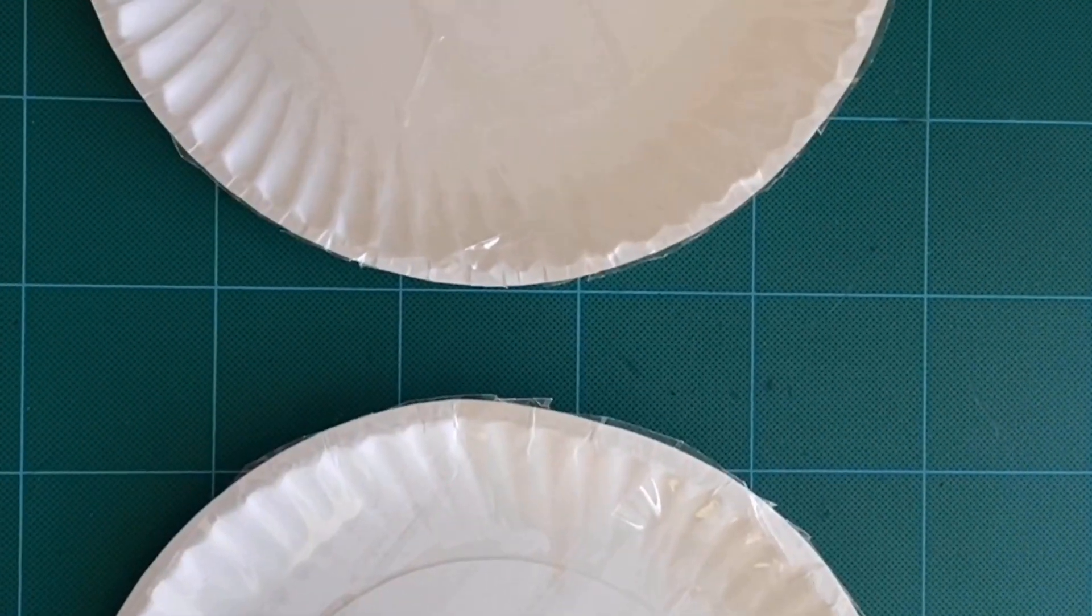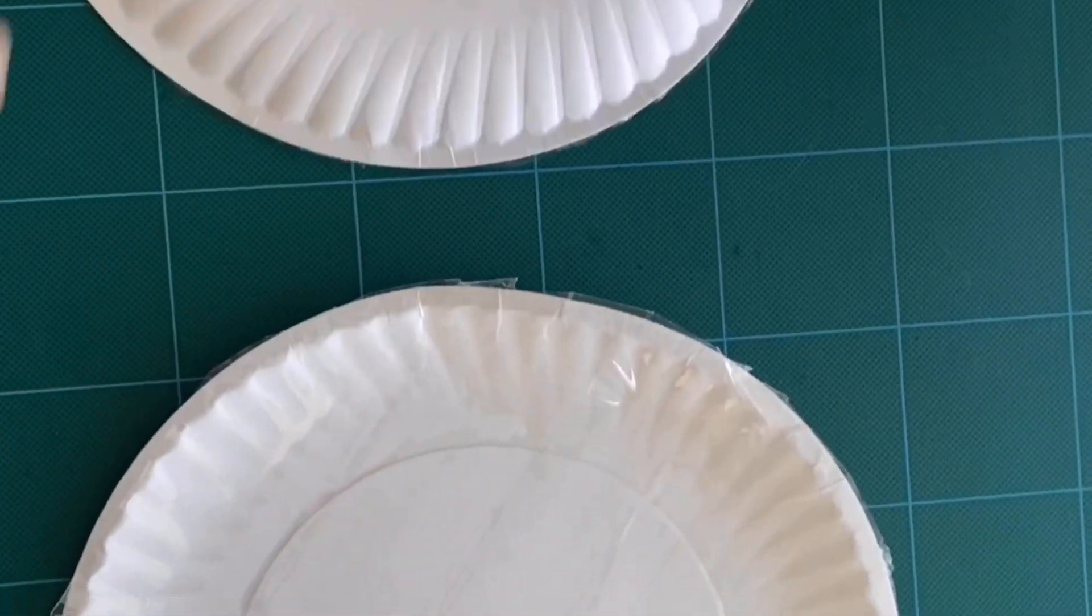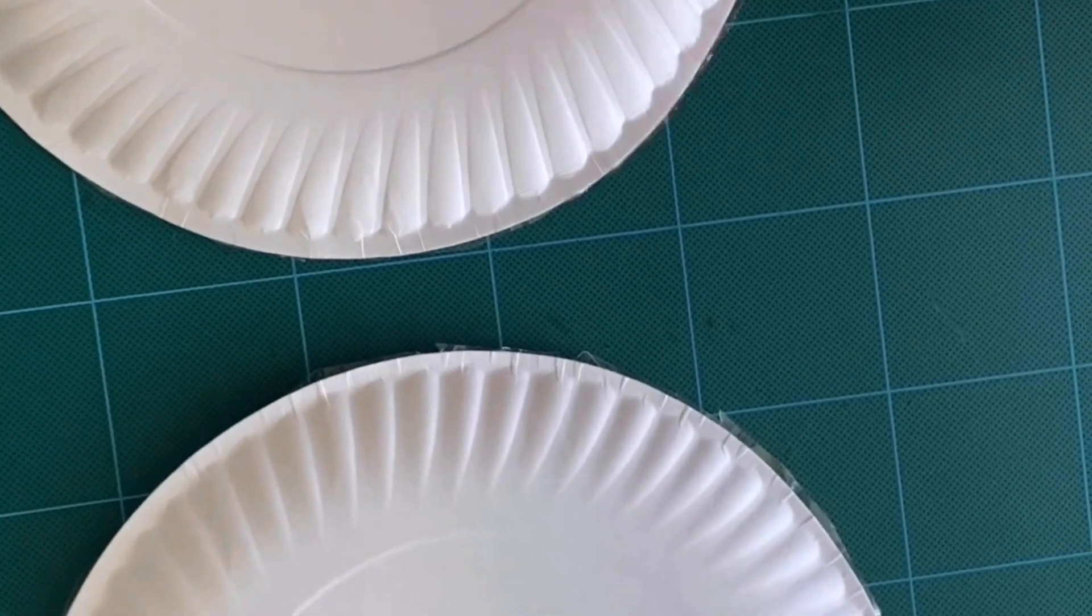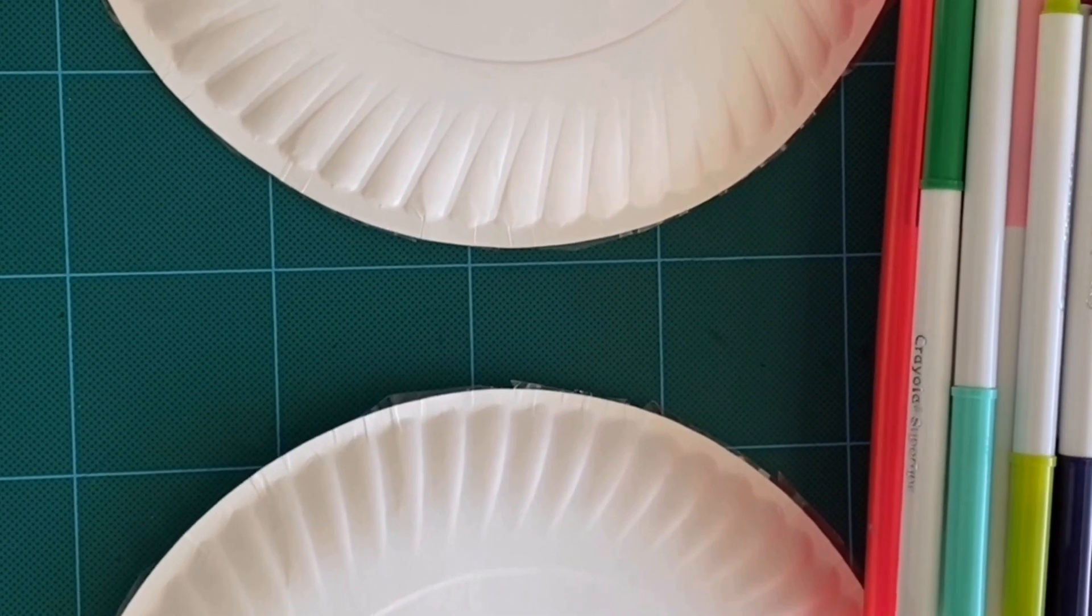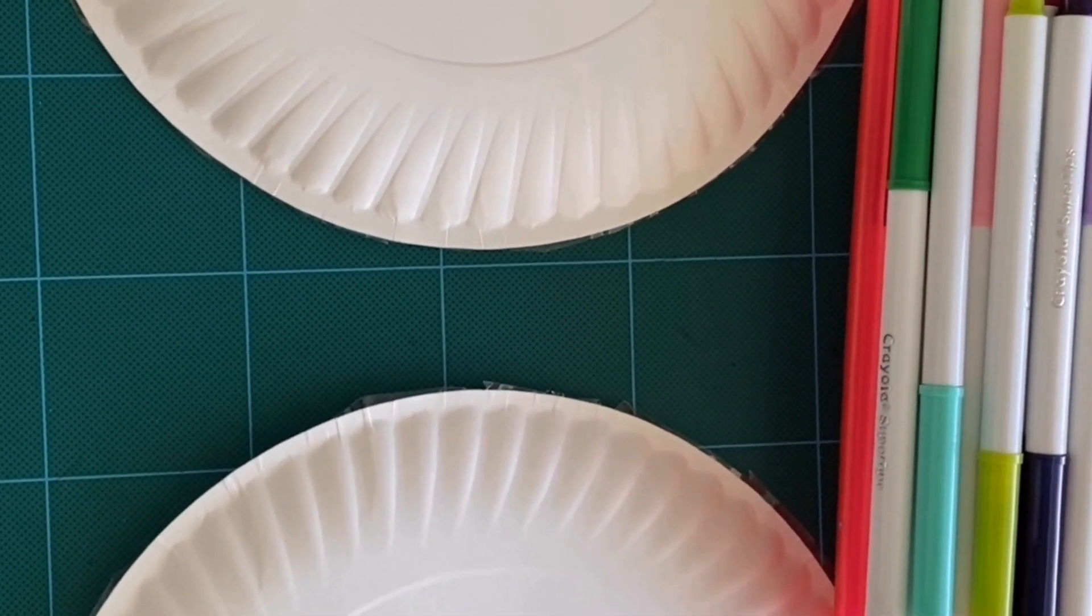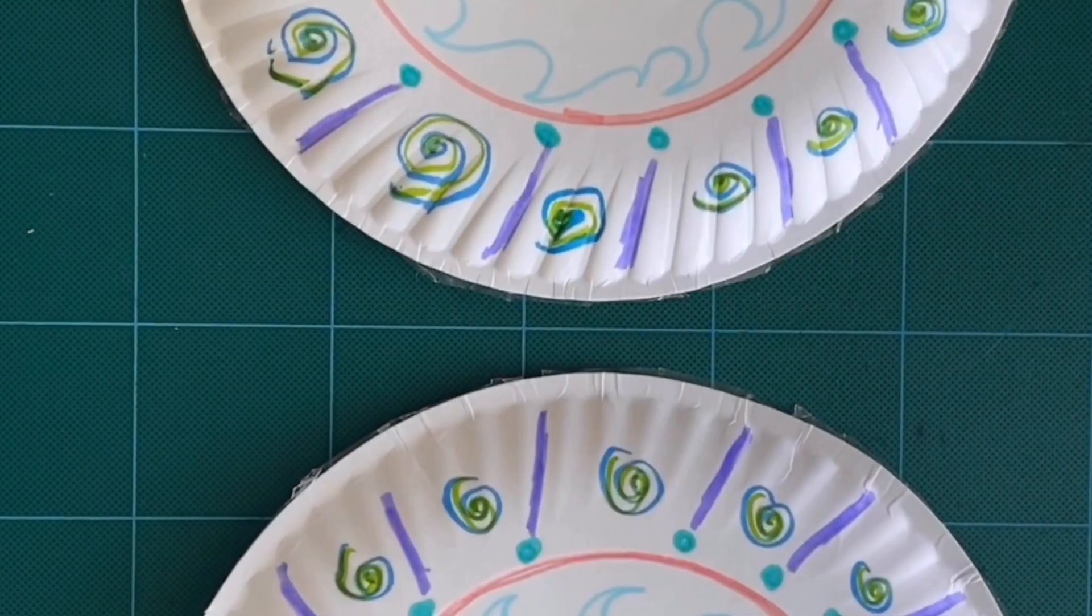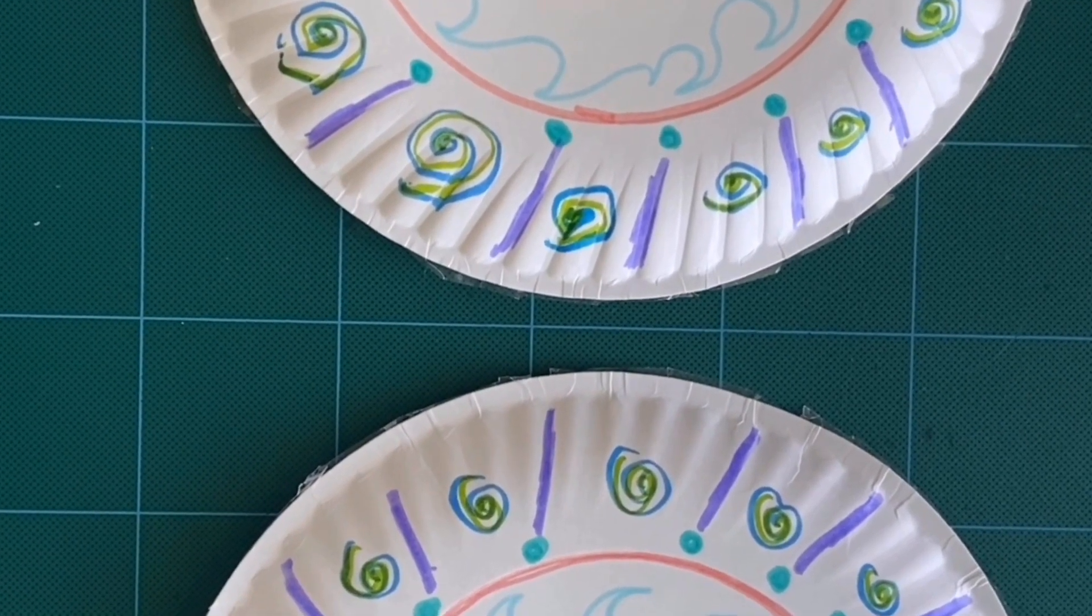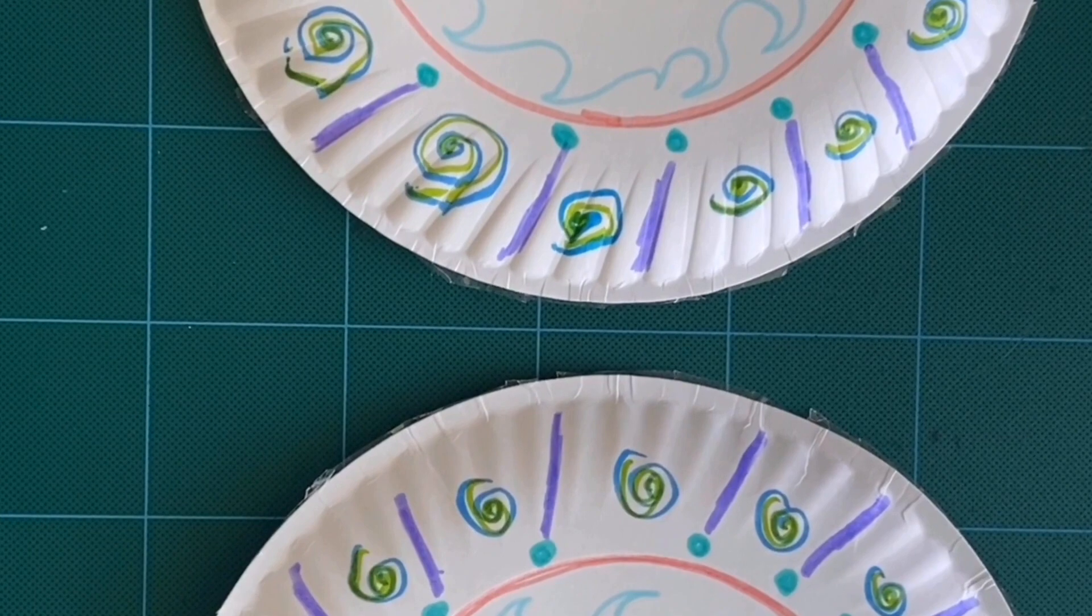Once you've cut the extras around the plate of the tape, you want to flip them over and get your markers ready. You can make any design, color it your favorite color, draw your favorite sport on there or maybe your favorite animal or a flower, however you want to decorate it. Remember when you decorate your frisbee to just do the outsides of the plates, not the inside because we're going to be cutting a circle in the middle of the plate.